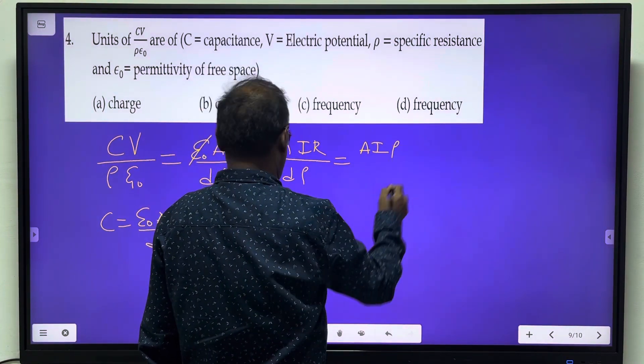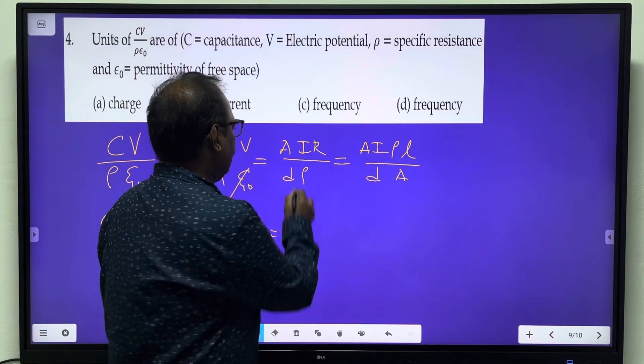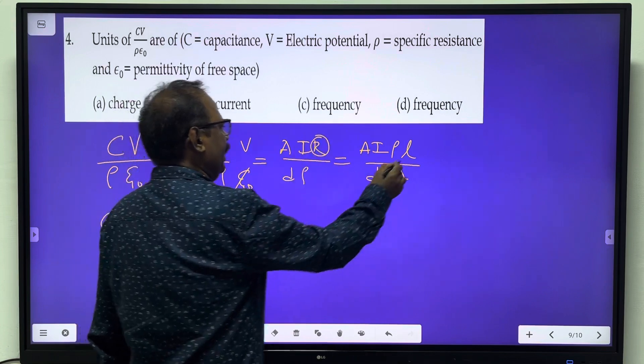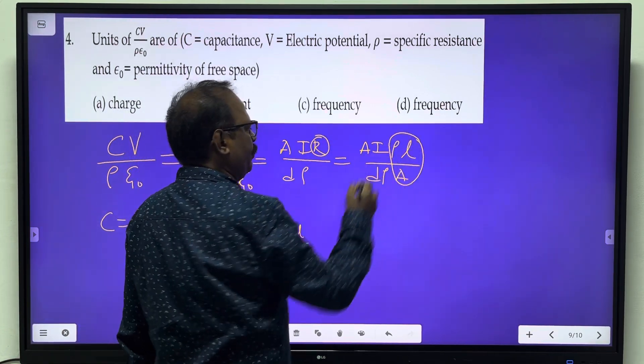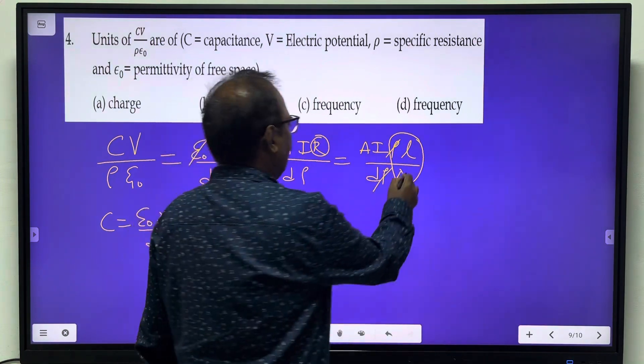Substituting resistance as ρL/A, we put ρL/A. Now ρ is cancelled, and area A is cancelled.